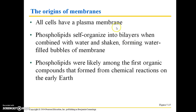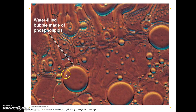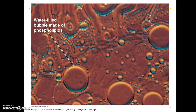Because of these chemical properties, it's thought that phospholipids were among the first organic compounds that formed from chemical reactions on the early Earth. An example of this is one of these water-filled bubbles actually made up of phospholipids — if you just have phospholipids that aren't even part of a living cell, they're still going to self-organize into these water-filled bubbles. We're going to talk a lot more about the evolution of life and organic molecules forming from non-organic molecules when we get into Chapter 15, which is a really interesting chapter.